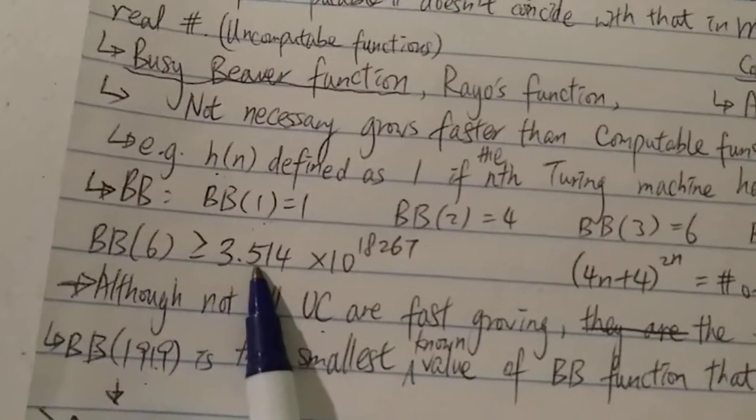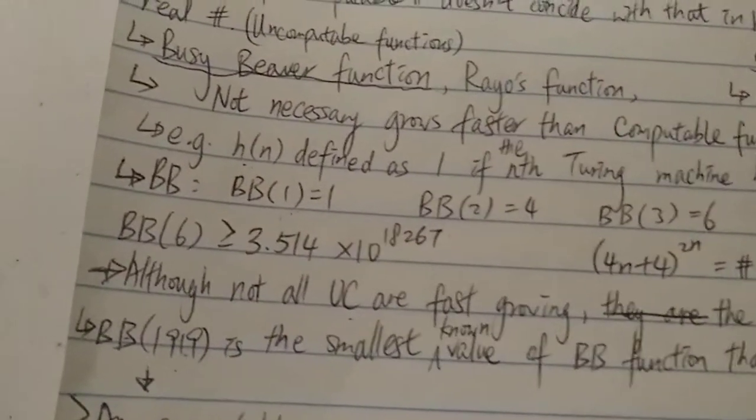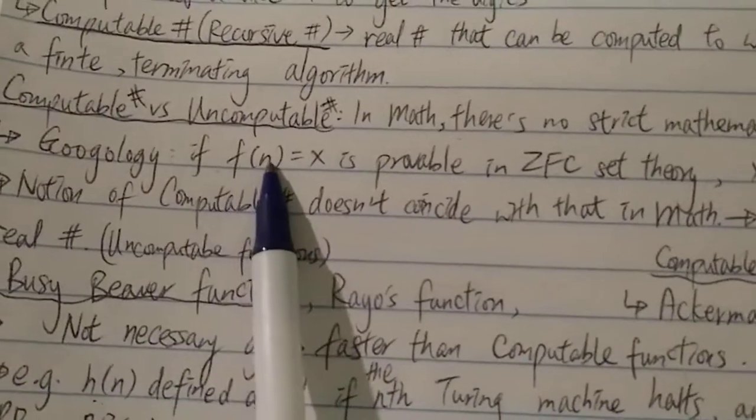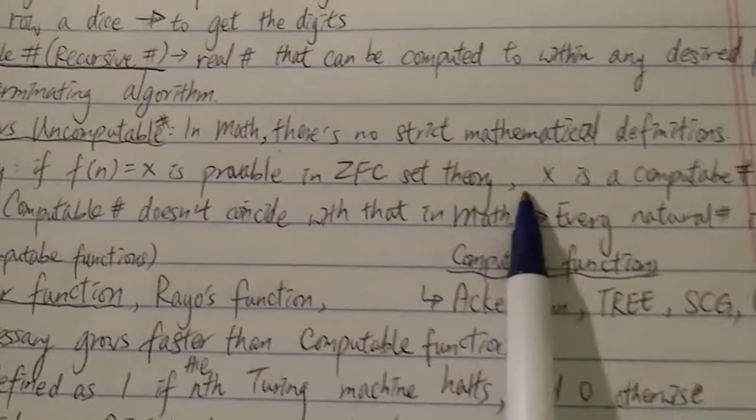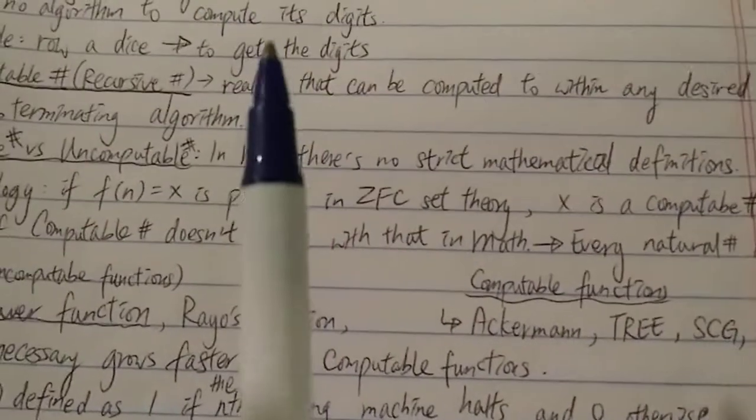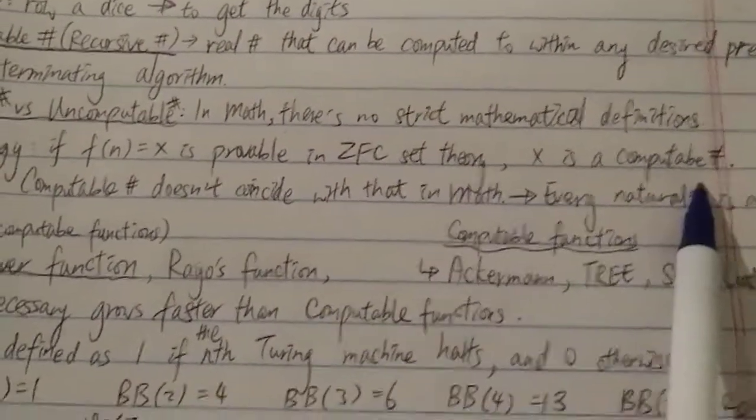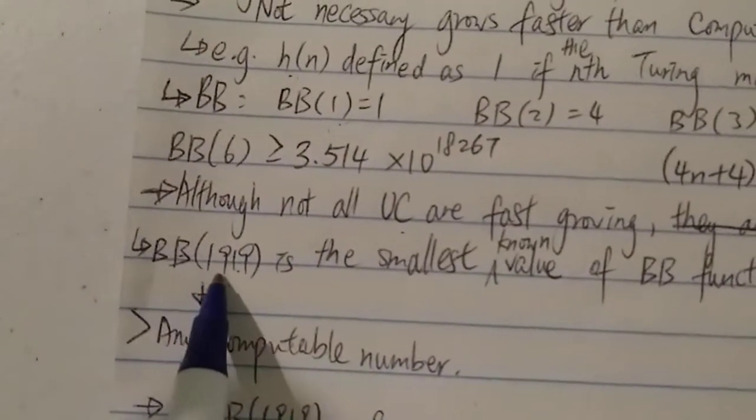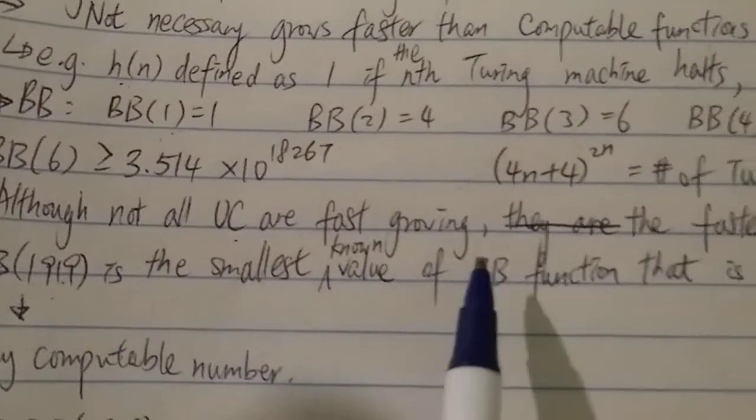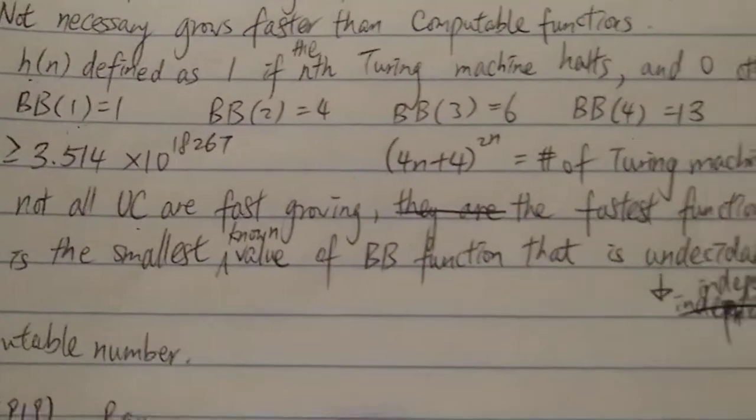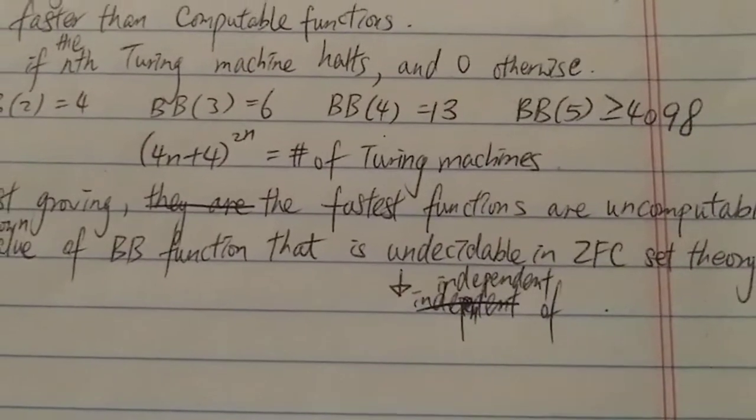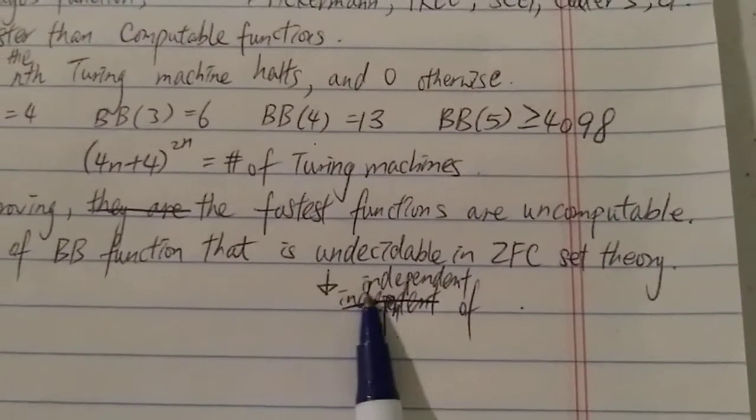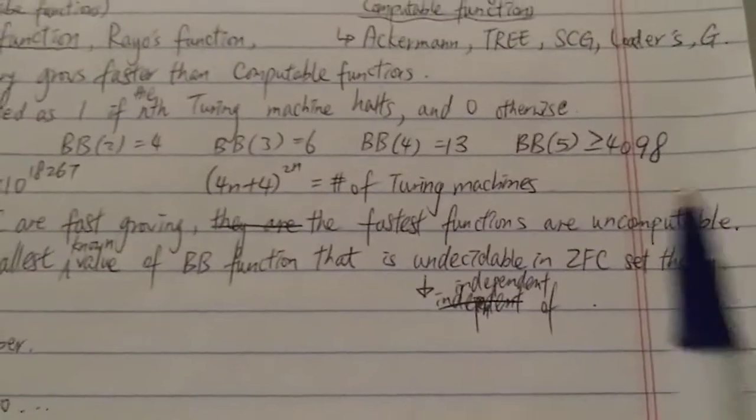For BB(6), it's known to be at least this number over here. Let me repeat this: if f(n) = x is provable in the ZFC set theory, then x is computable. If it's not provable in this set theory, then x is not computable. Actually, this number over here, Busy Beaver(1919), is the smallest known value of the Busy Beaver function that is undecidable or unprovable in the ZFC set theory, or you can say it's independent of ZFC theory. In other words, this number is an uncomputable number.